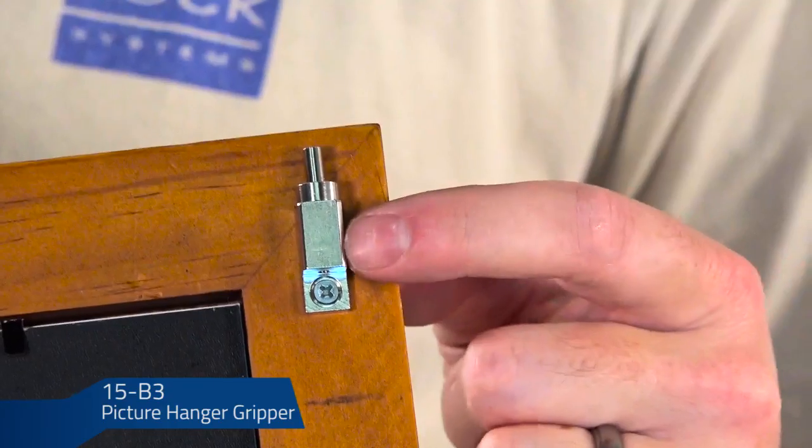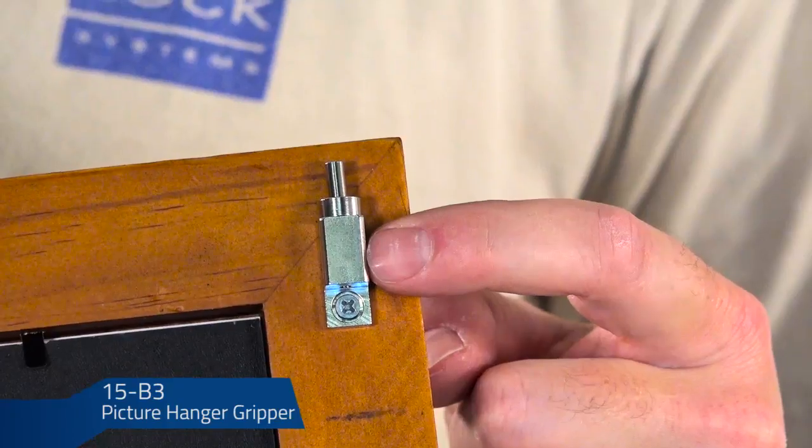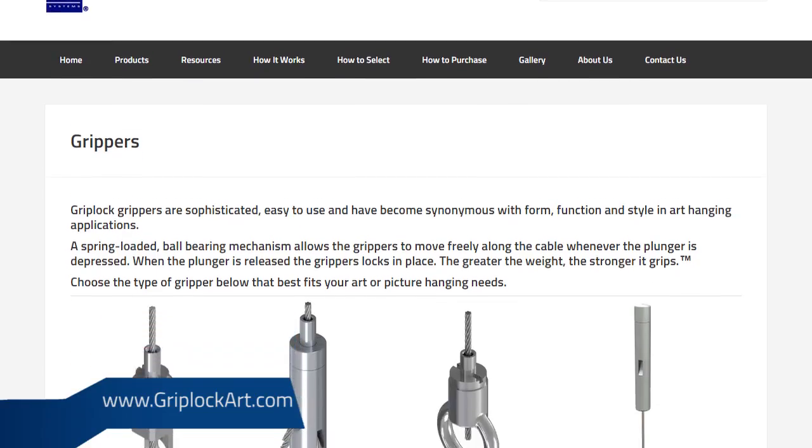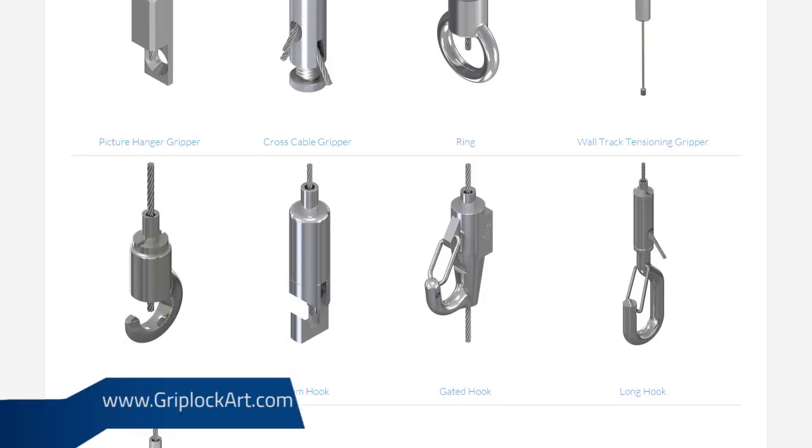This is a typical wood frame picture. Most of the pictures you're going to be hanging are like this. So today we're going to use the 15B3 gripper, which is ideal for these frames because it keeps the cable close to it. We mount it to the back of the frame, just below the top to hide it. If your frame already has hanging hardware attached, we have a wide variety of other grippers to accommodate your needs.